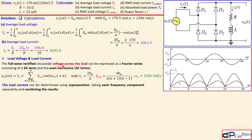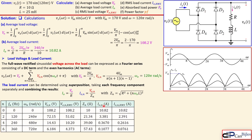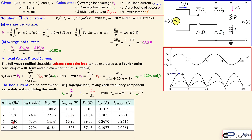The load current can be related to the load voltage using superposition — for each frequency component, we use Ohm's law to calculate the corresponding load current. The average load current equals the average load voltage divided by R, which is the pure resistive part. For the harmonics, the current harmonic equals the voltage harmonic divided by the impedance Z_N, where Z_N depends on R and the inductive reactance N·ω₀·L. Let's look at the table, which contains a lot of information.